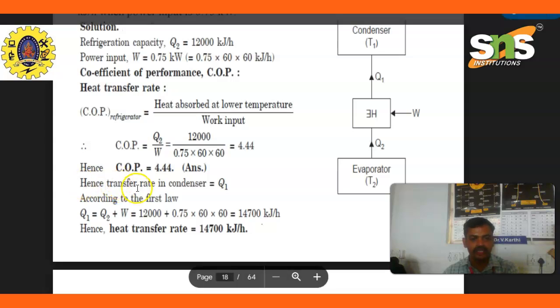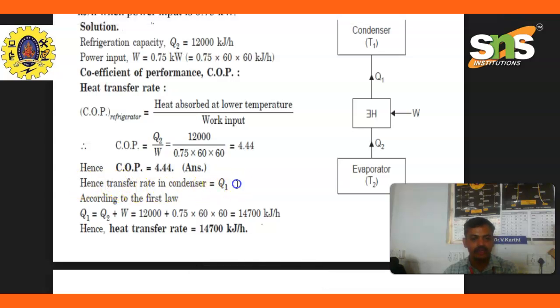Heat transfer rate in the condenser Q1: According to the first law, Q1 equals Q2 plus W. Hence, heat transfer rate equals 14,700 kilojoules per hour.